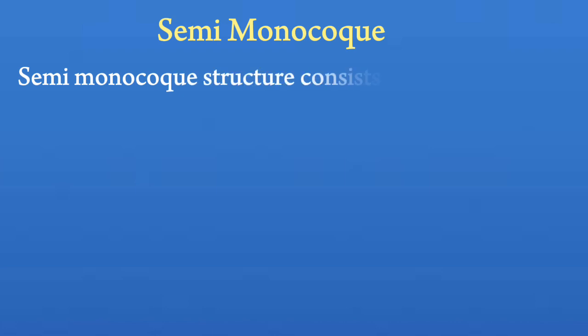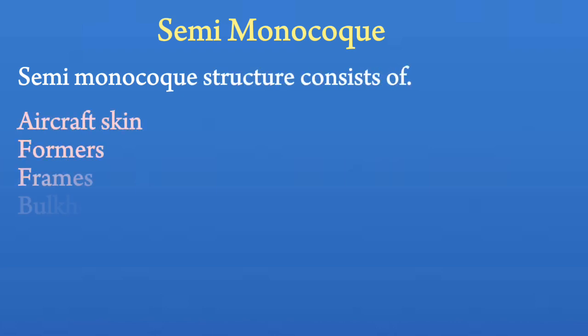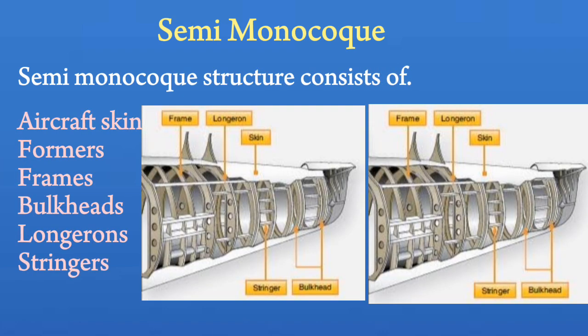Semi-monocoque. A semi-monocoque structure consists of aircraft skin, formers, frames, bulkheads, and longerons.